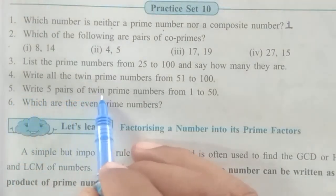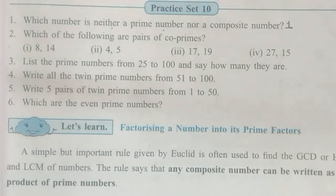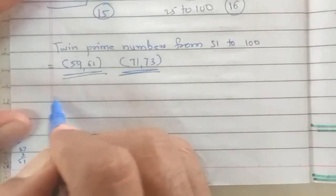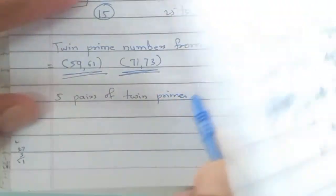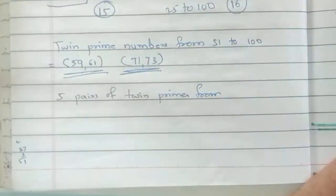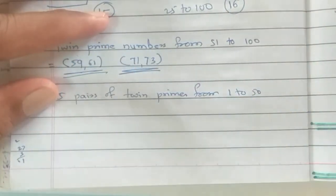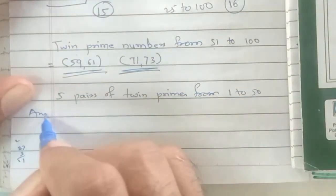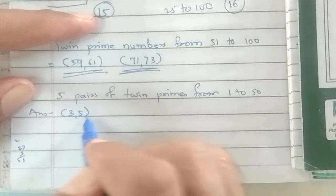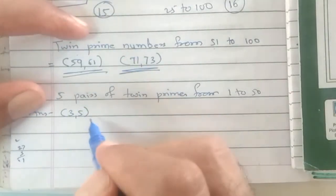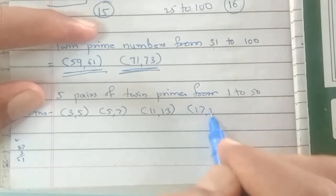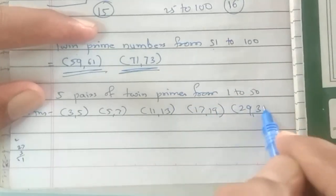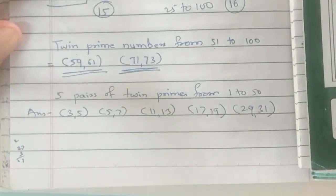Question number 5: write 5 pairs of twin prime numbers from 1 to 50. The pairs are: 3 and 5 (already given above), then 5 and 7, then 11 and 13, then 17 and 19 — remember the difference must be 2 — and 29 and 31. These are the 5 pairs of twin prime numbers from 1 to 50.